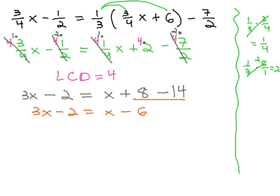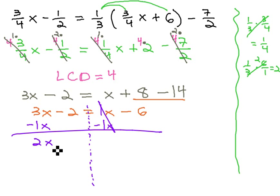We are now ready to solve this problem. First thing we need to do is get the variables all on one side. Since 1x on the right side is smaller, we'll get rid of 1 positive x with 1 negative x on both sides of the equation. We now have 2x minus 2 equals negative 6.